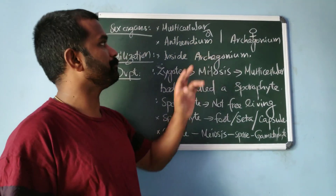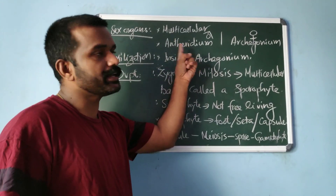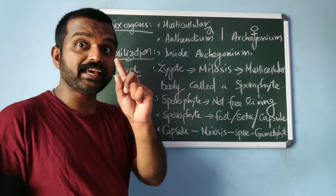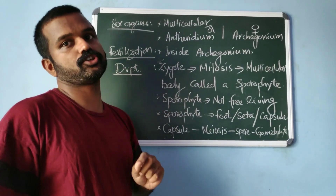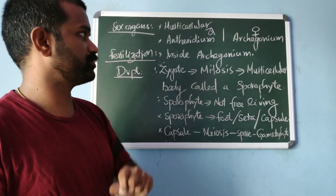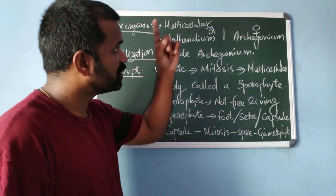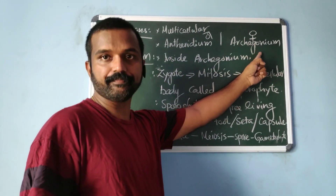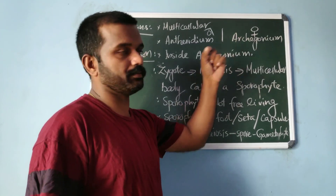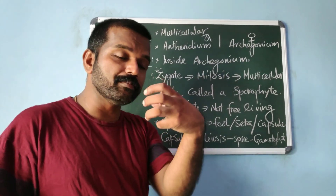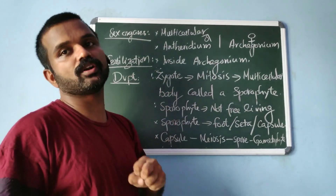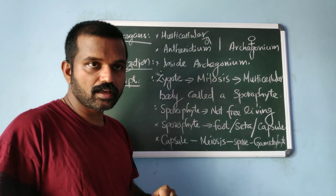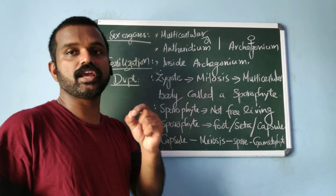The male sex organ is known as antheridium. The antheridium produces biflagellated male gametes known as antherozoids. The female sex organ is known as archegonium — a primitive sex organ, flask-shaped.